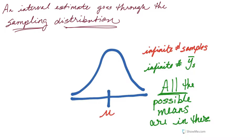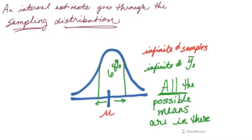So if I take a sample, my sample mean has to be in there somewhere. Where? I don't know exactly. What I do know is that 68% of all the possible sample means are within a particular distance of the center. The empirical rule tells us it's exactly one standard error from the center. Therefore, I also know that if I go two standard errors away from the center, 95% of all the sample means are between those two points.